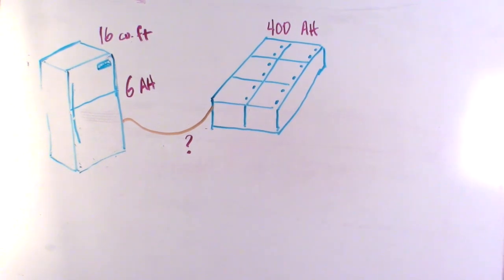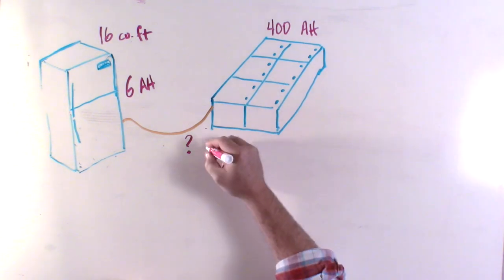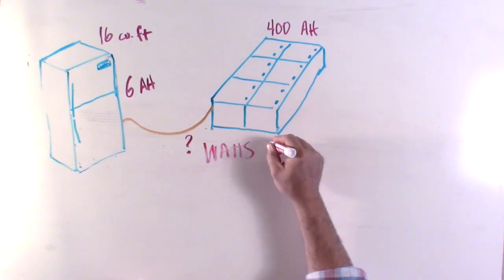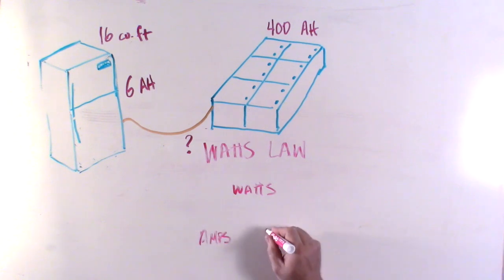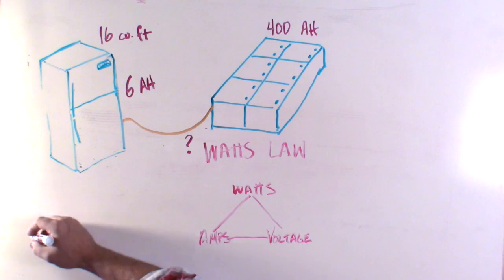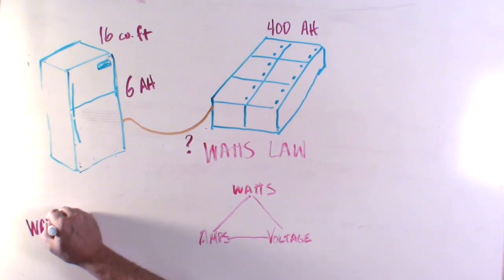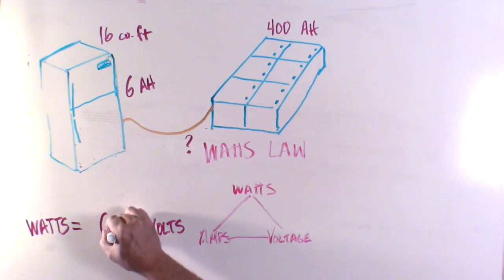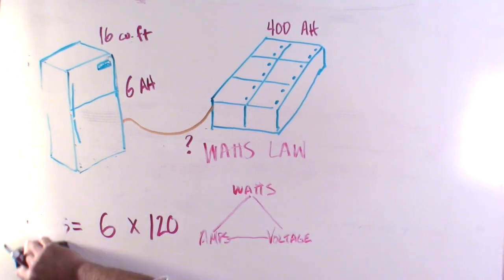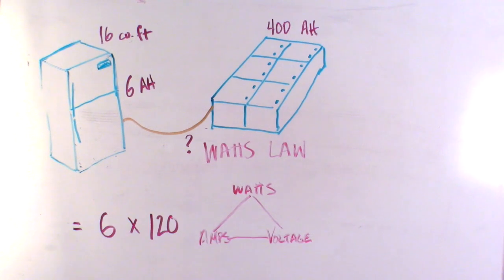Then how long can you run it? Any guesses? Well, to understand that you need to understand Watts law. Now don't fall asleep. I promise this is about to get good. Watts law states the relationship between watts, amps, and voltage and they make a perfect triangle. The law states the relationship is watts equals amps times volts.